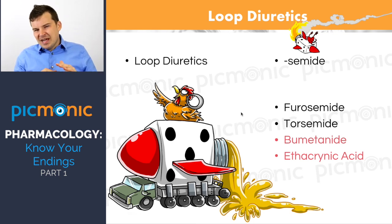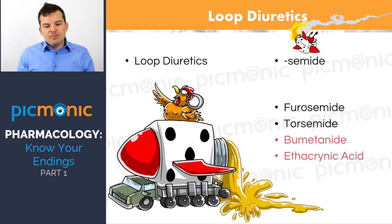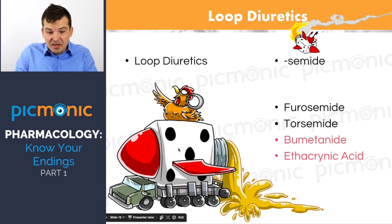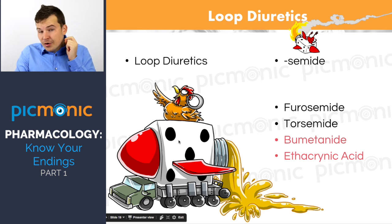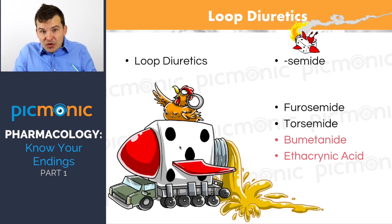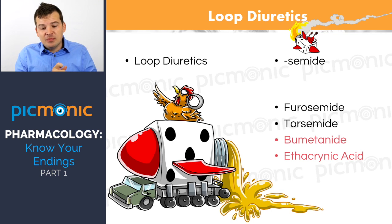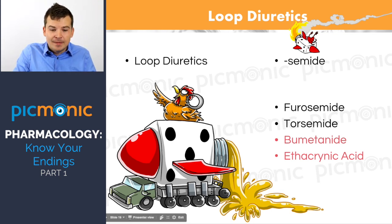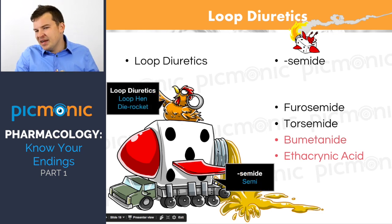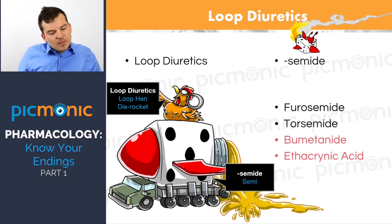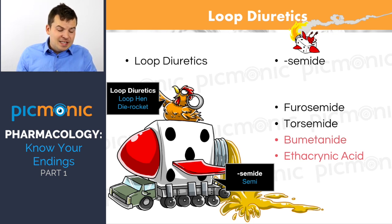Next: loop diuretics. In Picmonic, we have a diuretic rocket spewing yellow fluid. The key drug ending is -semide — S-E-M-I-D-E — which covers furosemide (Lasix) and torsemide. Always use the generic name. Two others, bumetanide and ethacrynic acid, are shown in red because they're different.